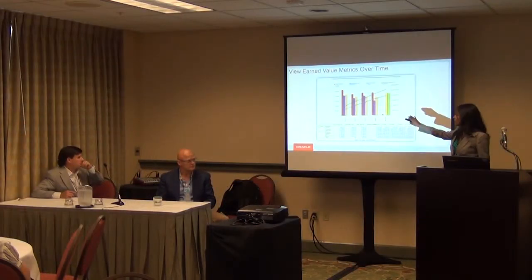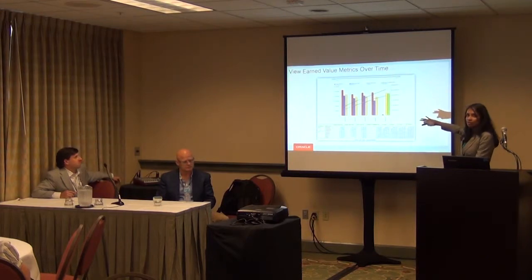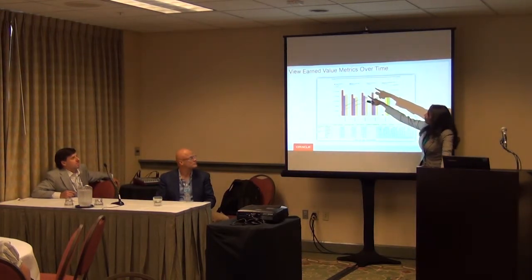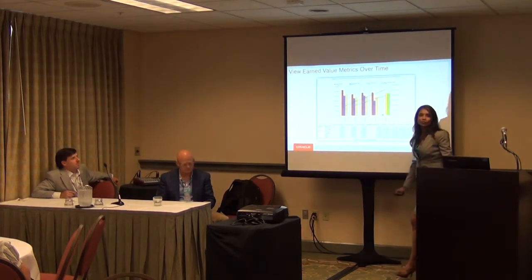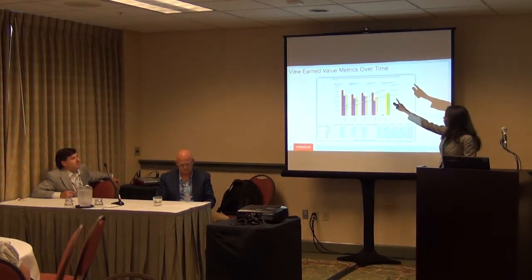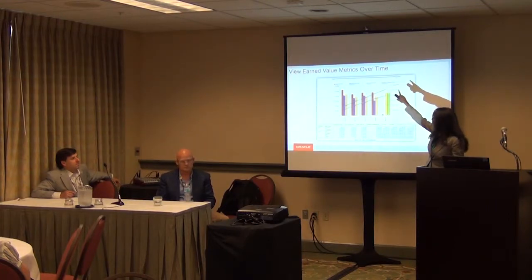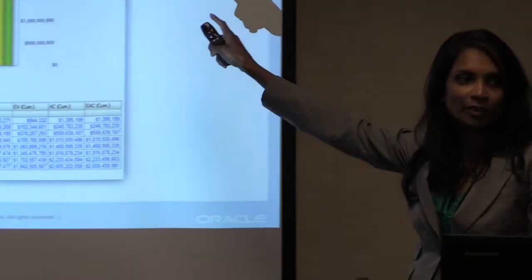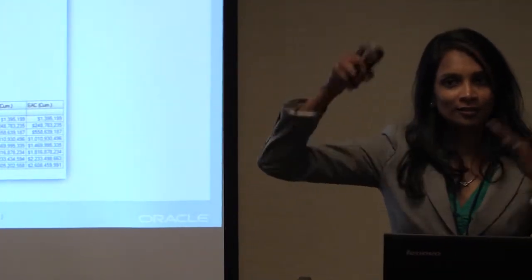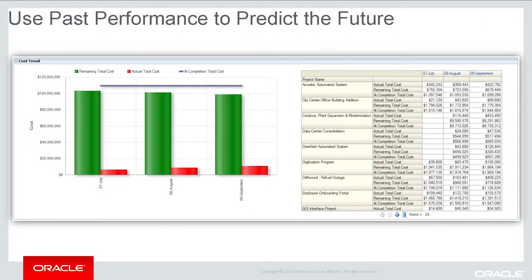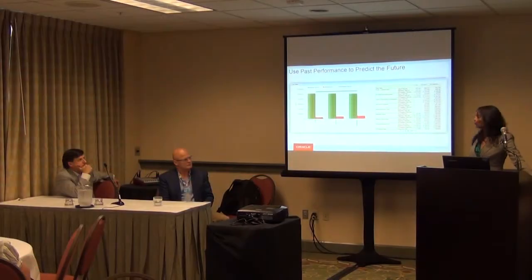One of the nice things in this particular view — the time-change one — is a play button. When you click the play button, the graph changes based on year: 2010 and 2011. So you can actually change over whatever time period you've defined and see how the earned value metrics change over time in that format. Use past performance to predict the future — looking at how it's been done in the past and what you can change to make it better moving forward.